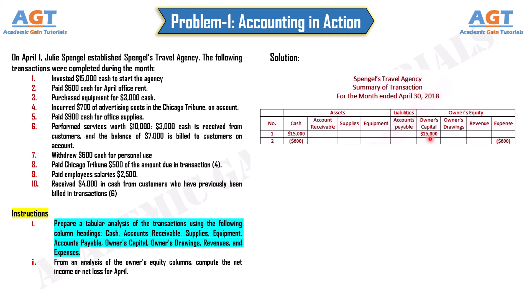Transaction 2: paid $600 cash for April office rent. Assets in the form of cash decrease by $600, and expenses in the form of rent increase by $600. Transaction 3: purchased equipment for $3,000 cash. Assets in the form of cash decrease by $3,000, and assets in the form of equipment increase by $3,000.